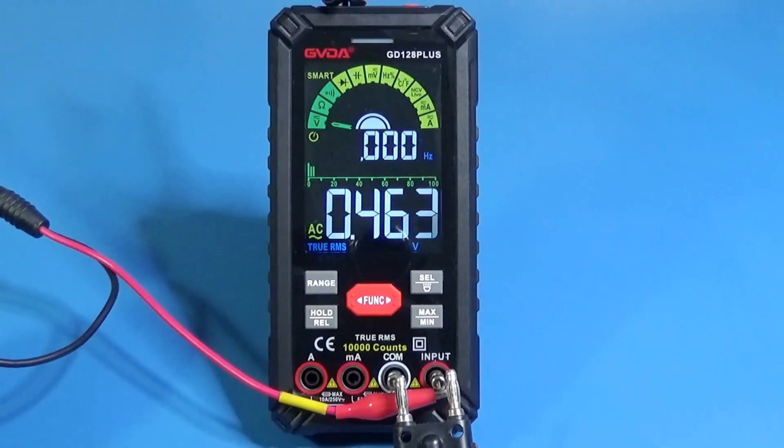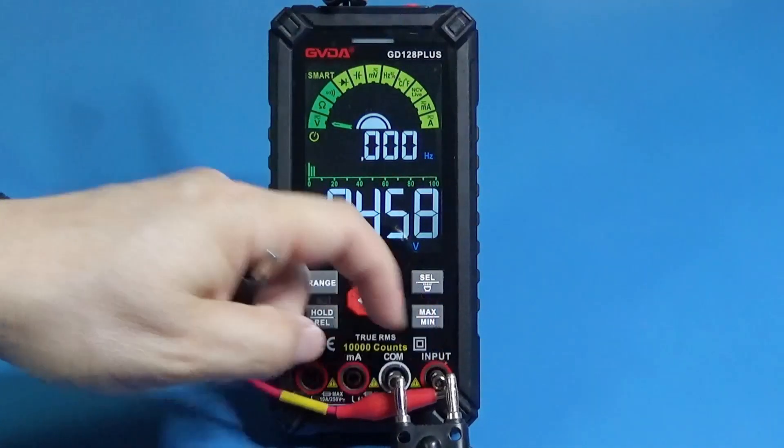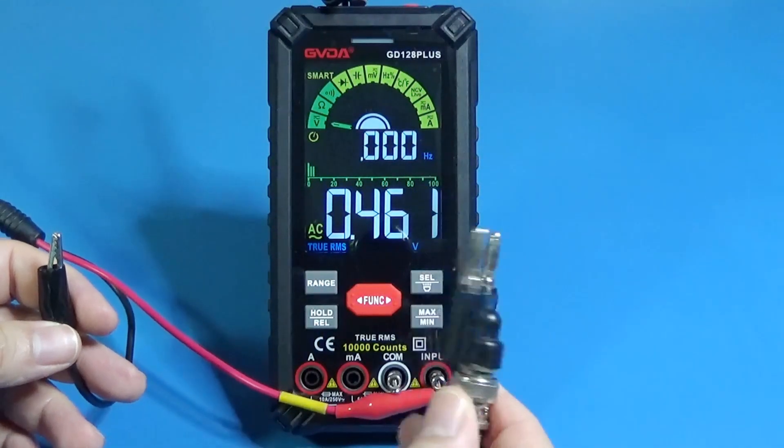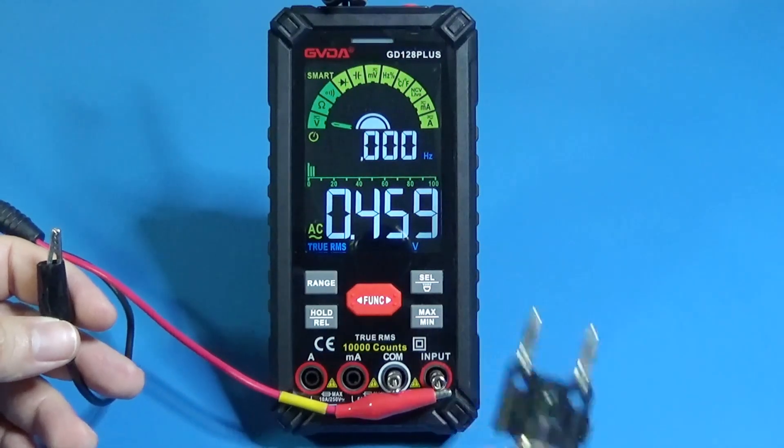Because nothing is perfect, this multimeter doesn't have the standard separation between the banana connectors and we cannot use some of the accessories we use with the professional equipment.